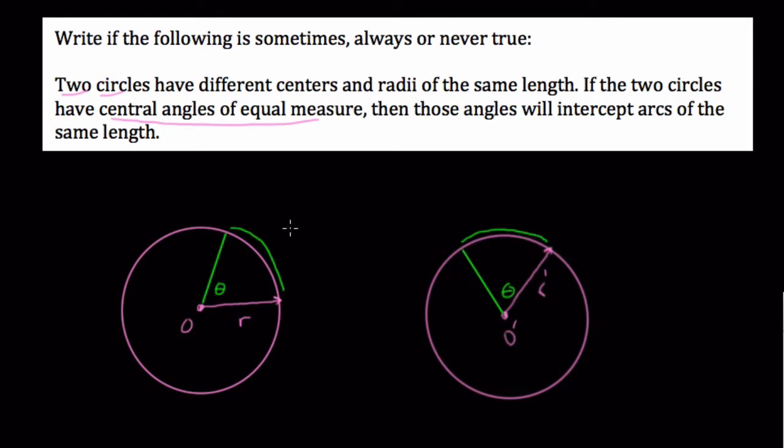I mean, if you want to think about even the formula, the way we find arc length in degrees is to take your angle theta, multiply it by pi over 180, and then times the radius.